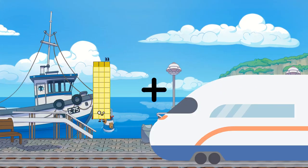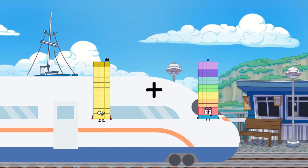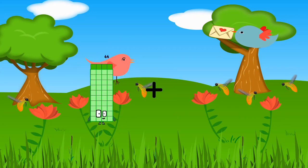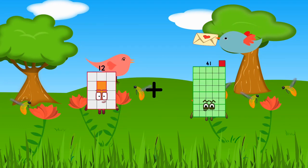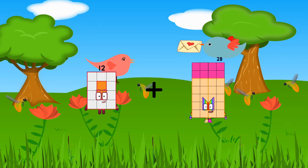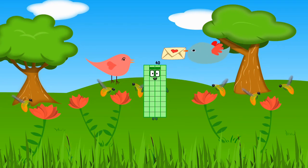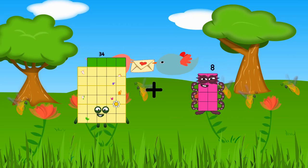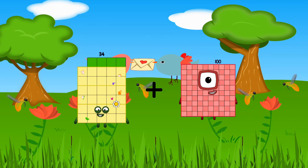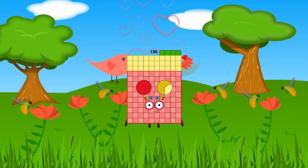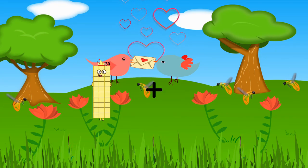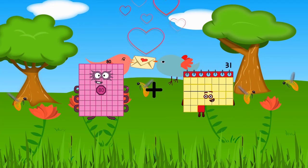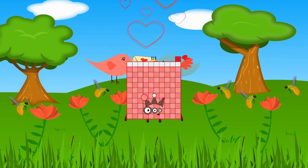33 plus 95 equals 179. 33 plus 44 equals 28. 34 plus 100 equals 134. 80 plus 31 equals 111.